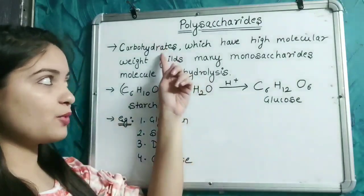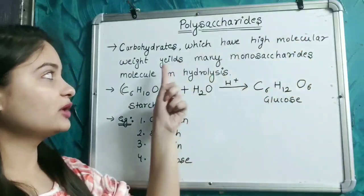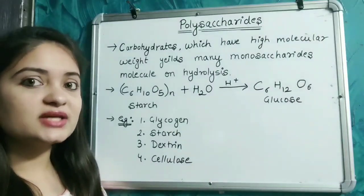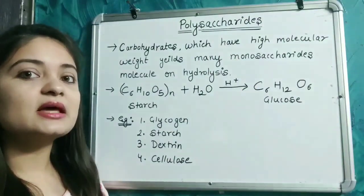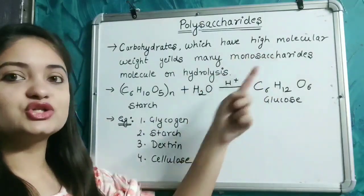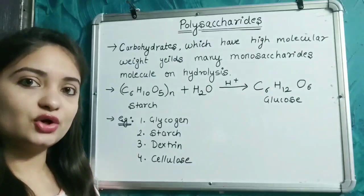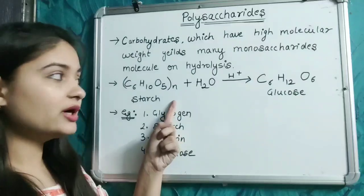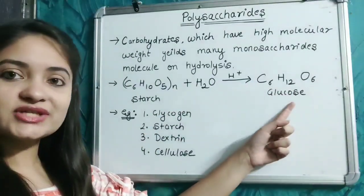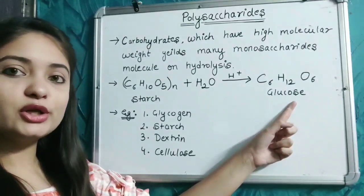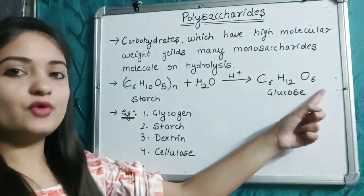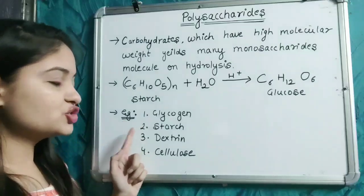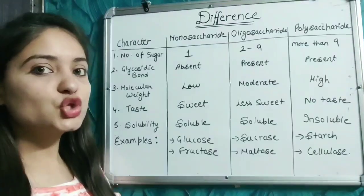Polysaccharides are carbohydrates which have high molecular weight and yield many monosaccharide units on hydrolysis — 'poly' means many. For example, starch is a polysaccharide which on hydrolysis yields glucose, having the molecular formula C₆H₁₂O₆. Other examples of polysaccharides include glycogen, starch, dextrin, and cellulose.